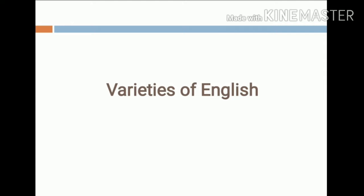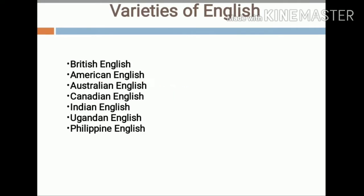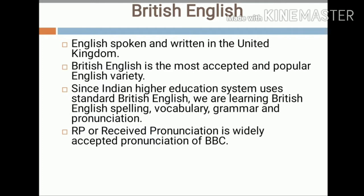In today's class we are discussing seven major types of English: British English, American English, Australian English, Canadian English, Indian English, Ugandan English, and Philippine English. Now let's take the first variety of English.